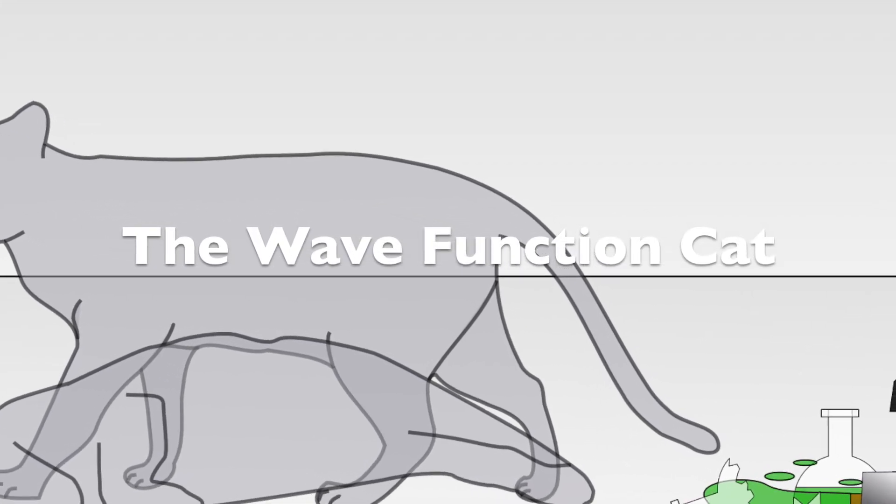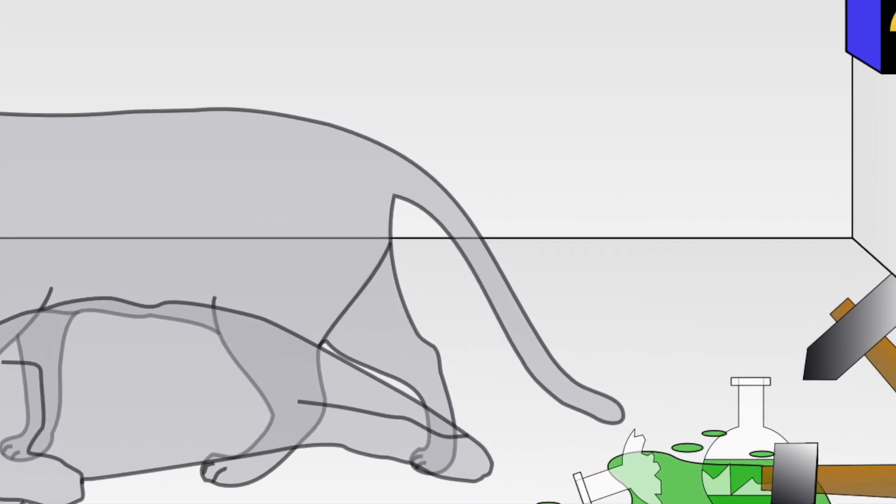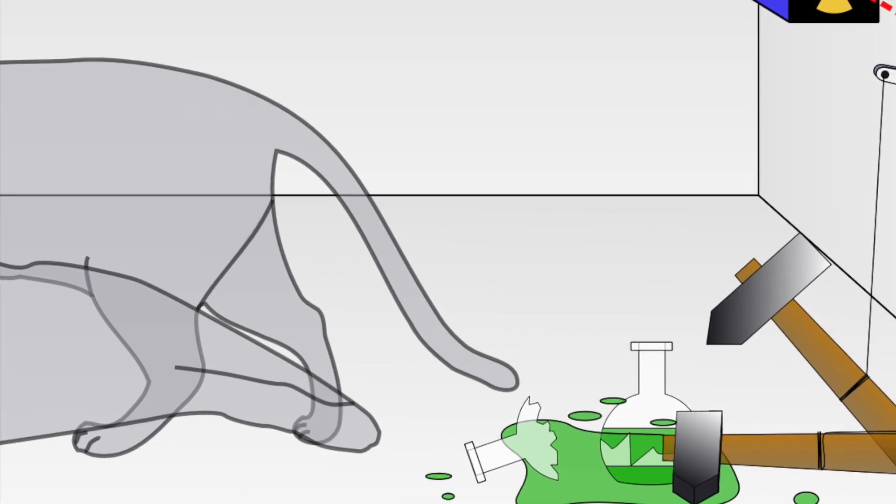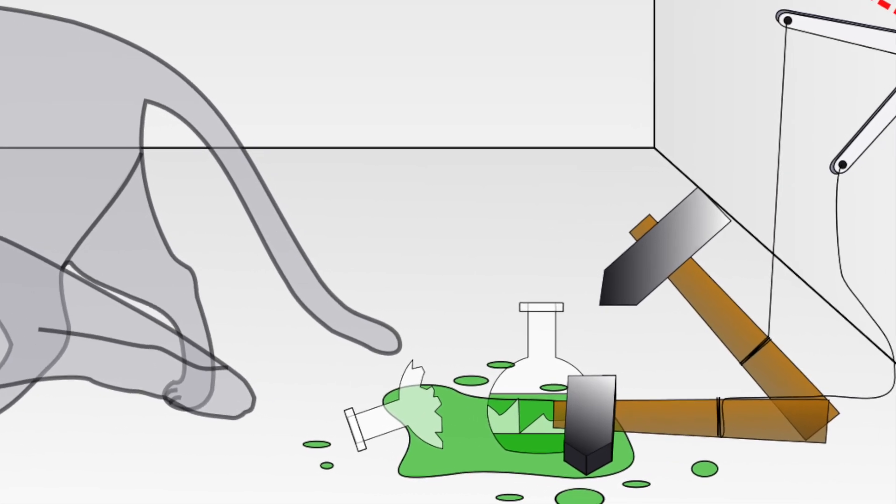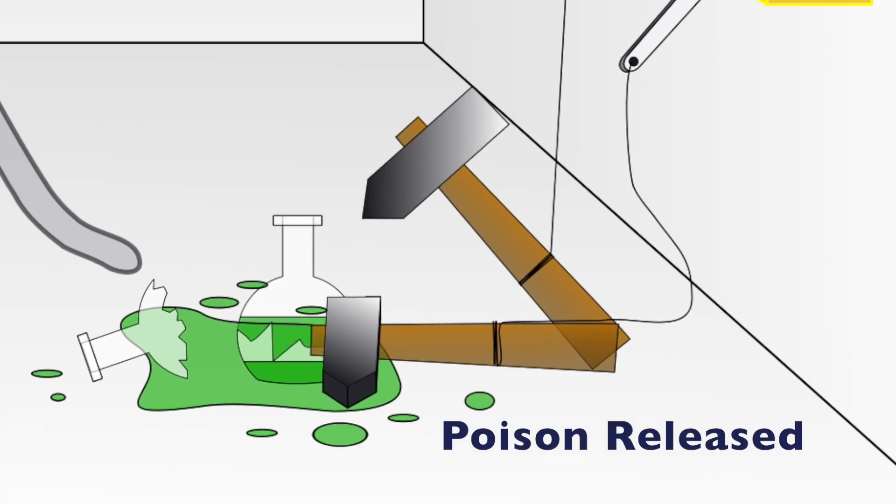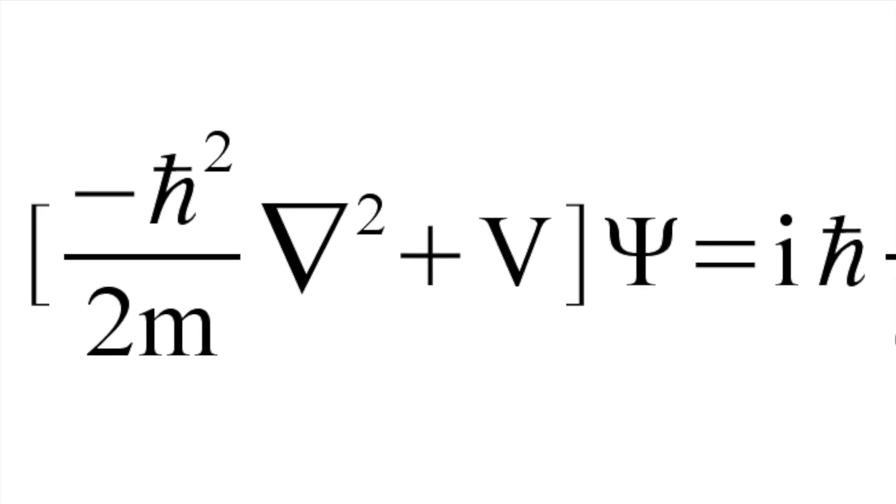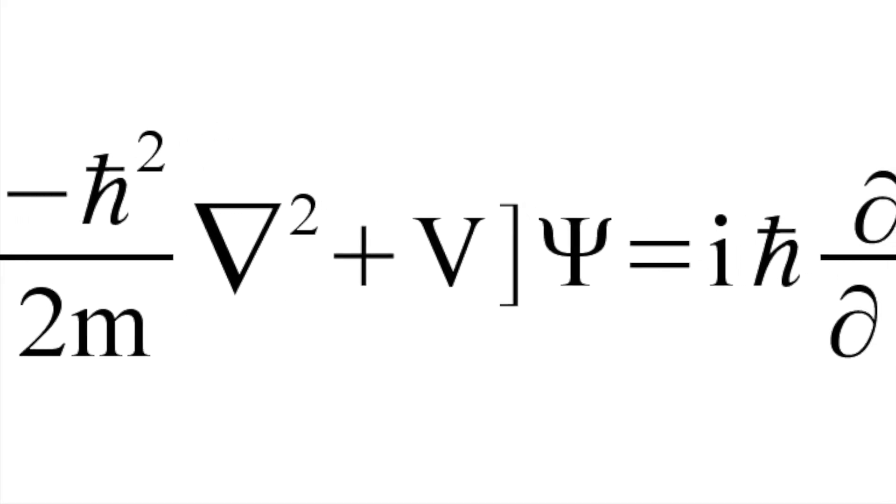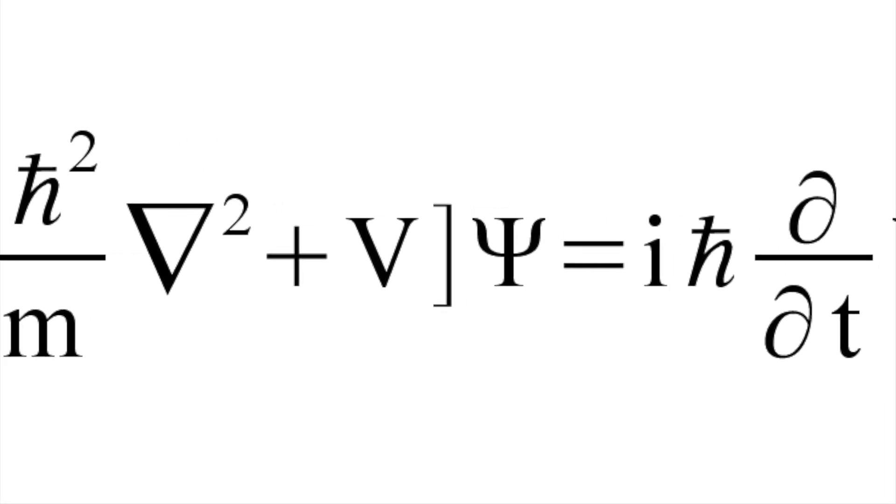Schrödinger's thought experiment involved placing a cat in a sealed box with a flask of poisonous gas. The flask can be broken by a hammer whose fall is triggered by the emission of a particle from a radioactive substance. Since the emission of the particle is a quantum event, the equations say that in the absence of any measurement, the particle is both emitted and not yet emitted.